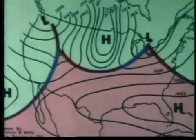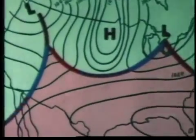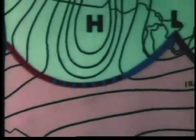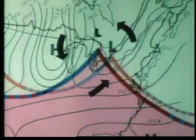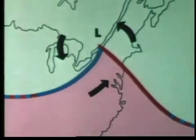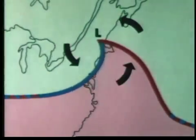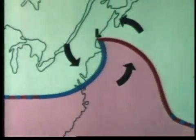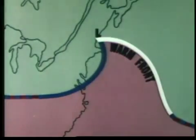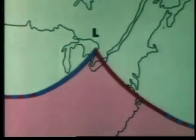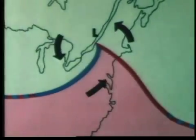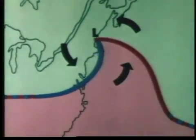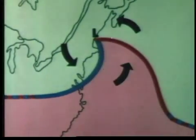When neither air mass pushes into the other, the front between them is called stationary. When the colder air mass retreats from the warmer, its trailing edge is called a warm front. When, however, the colder air mass pushes forward into the warmer, its leading edge is called a cold front.